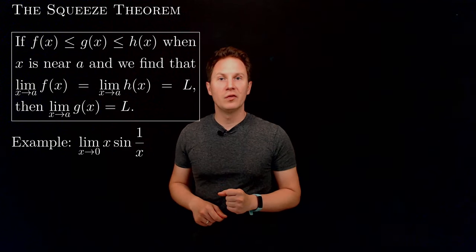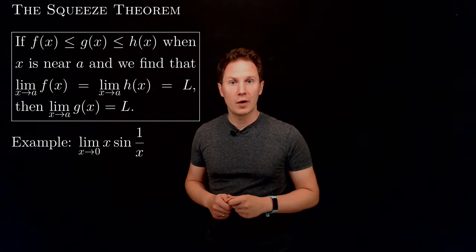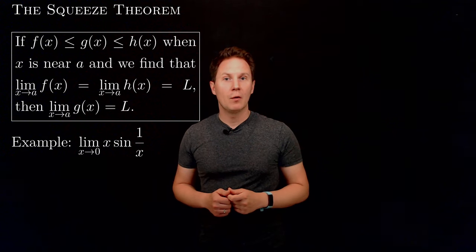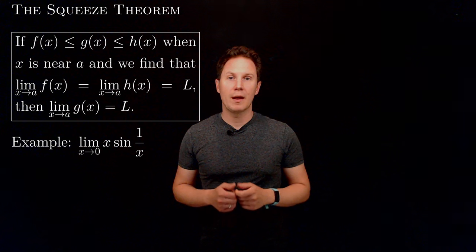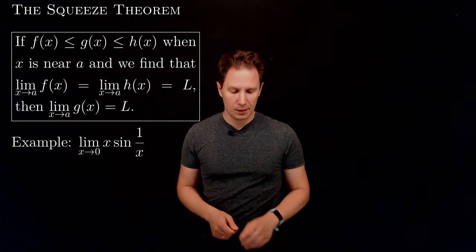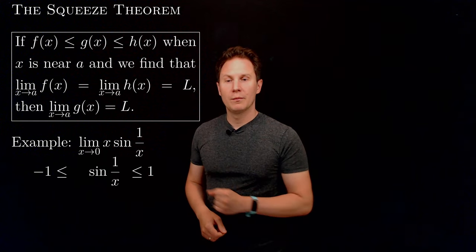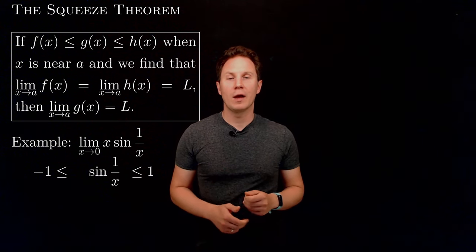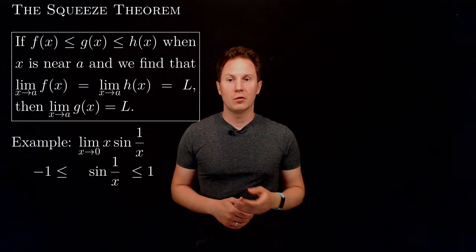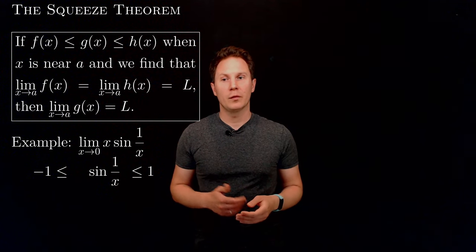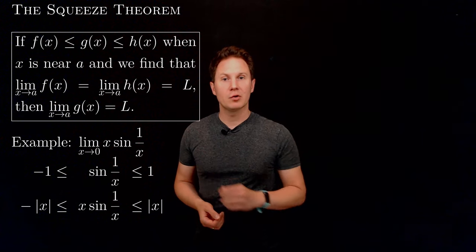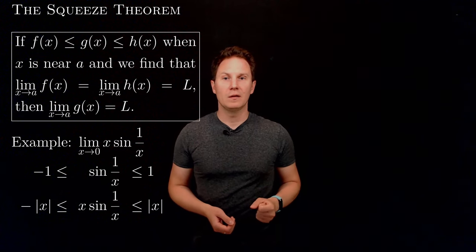The limit as x approaches 0 of x times the sine of 1 over x seems like a rather complicated limit, and it's unclear how we would evaluate it using the methods that we know so far. But we may start from the fact that the sine function always takes values between negative 1 and 1, so the sine of 1 over x is bounded from below by negative 1 and from above by 1. Multiplying by x to get the function that we're interested in will result in these inequalities.